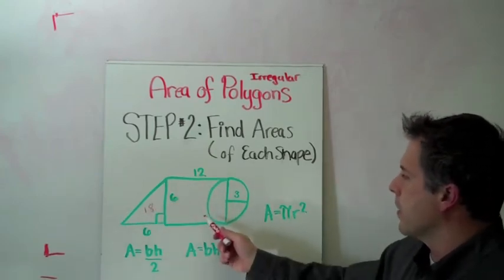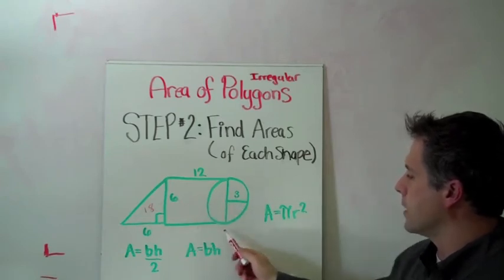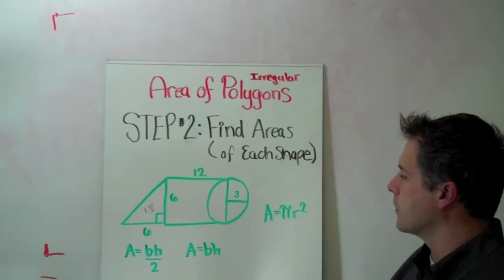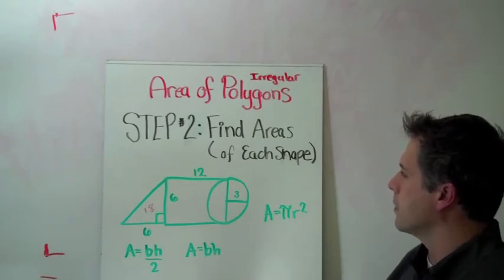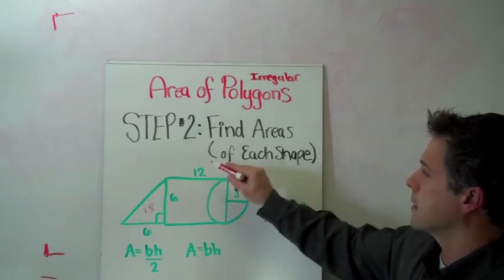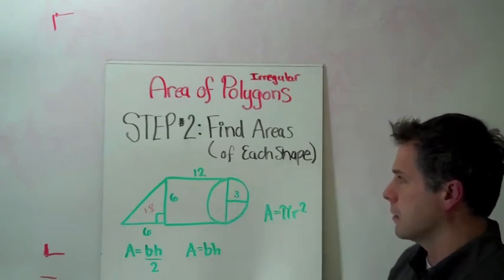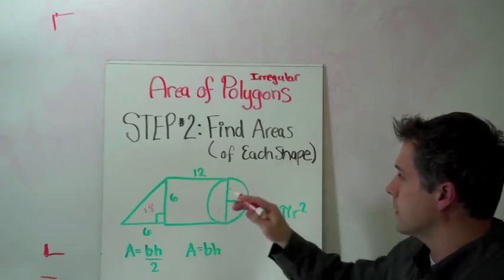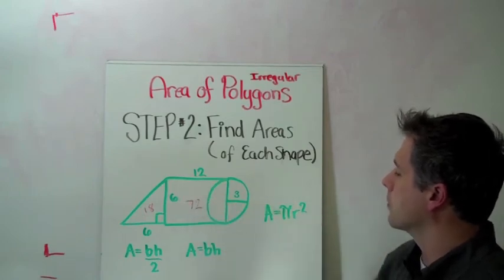And then we have a rectangle here in the center. It has a base of 12 and the height of 6. So base times height is the area of that rectangle. And 6 times 12 is, 6 times 10 is 60, 6 times 2 is 12. 12 and 60 is 72.